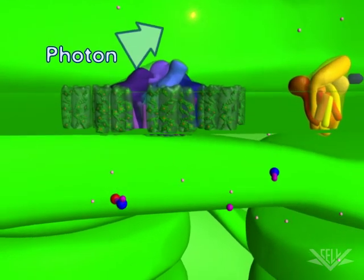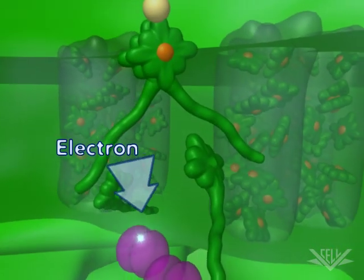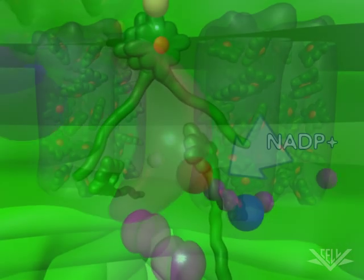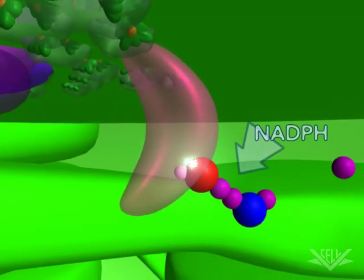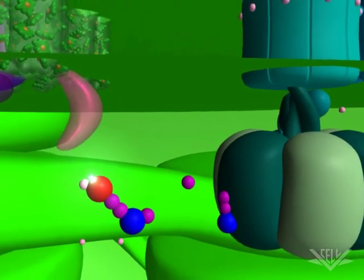It begins with a photon of light that produces the energy necessary to release an electron down the carrier chain. Here, you can see the electron moving between the carriers, along with ATP being produced by ATP synthase.